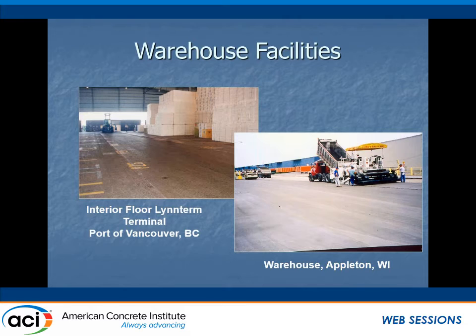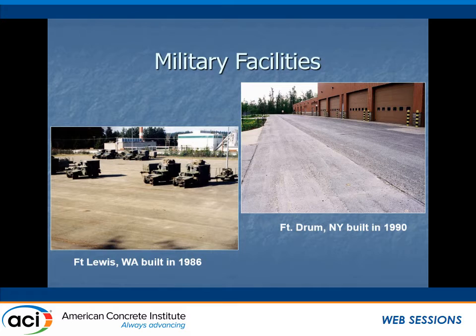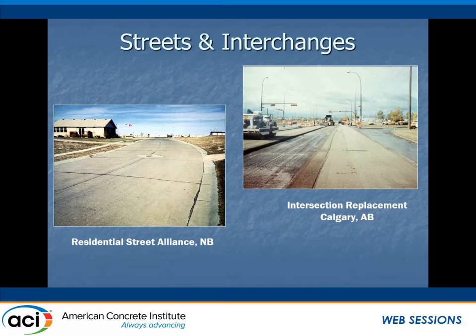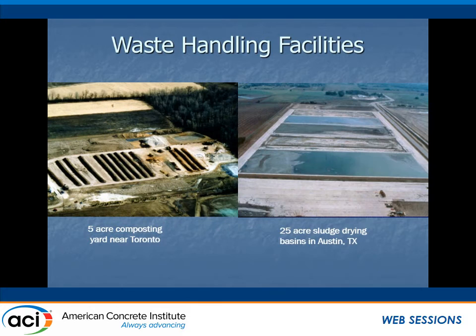Warehouse facilities, including some interior warehouses — one of the first projects I saw in Birmingham, Alabama was a block factory put in with roller compacted concrete for the pavement. When you're stacking up pallets of concrete block, it provides excellent service for that. There are also a lot of industrial applications, Corps of Engineers and military facilities going back many years — tank hard stands at Fort Carson, Colorado, and early use for streets, interchanges, and some continuing use in Ohio. A widely publicized project was the I-285 shoulder project around Atlanta, Georgia.